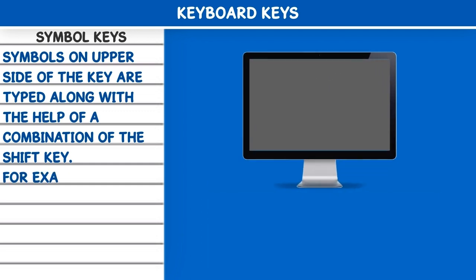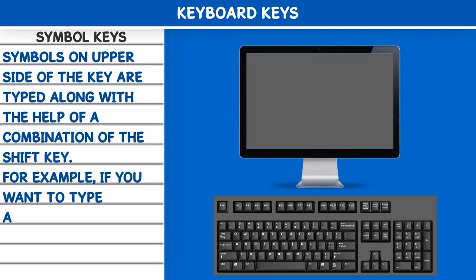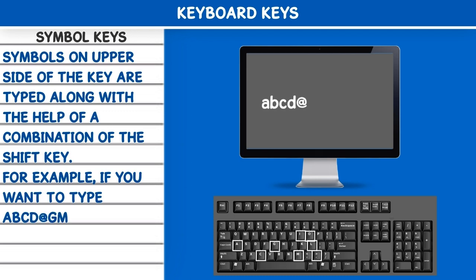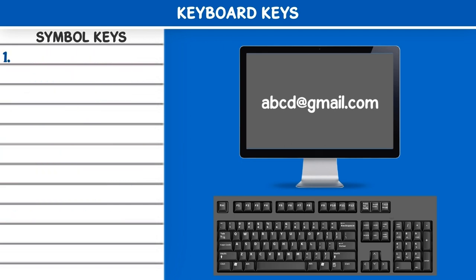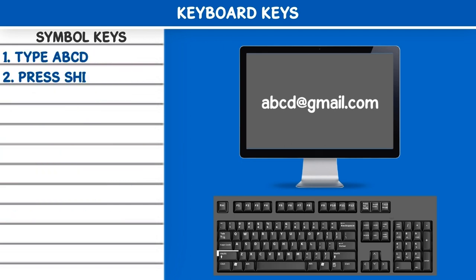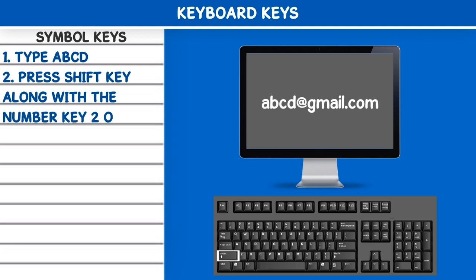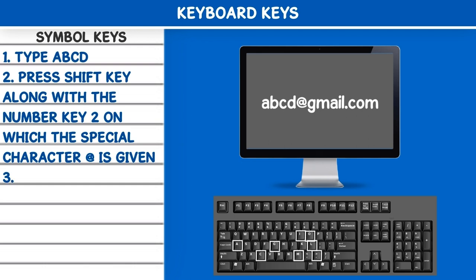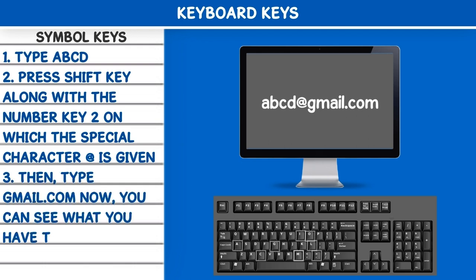For example, if you want to type abcd@gmail.com: 1. Type A, B, C, D. 2. Press the Shift key along with the number key 2, on which the special character at (@) is given. 3. Then type gmail.com. Now you can see what you have typed on the computer.